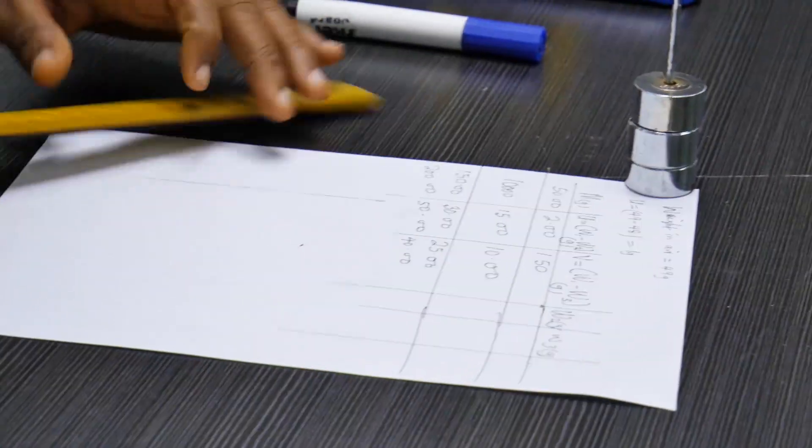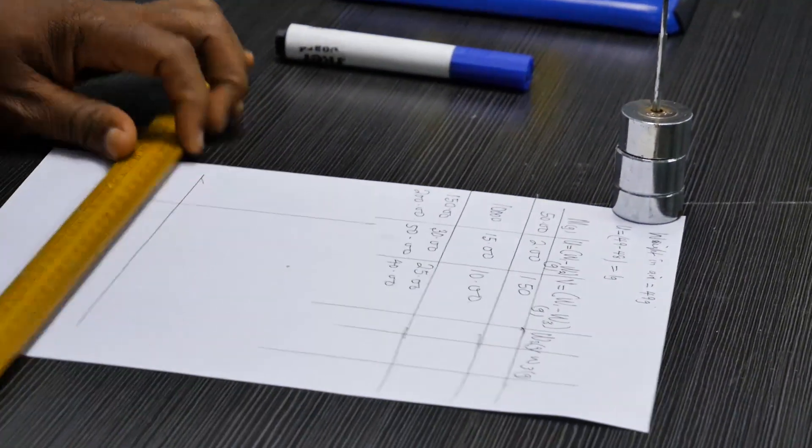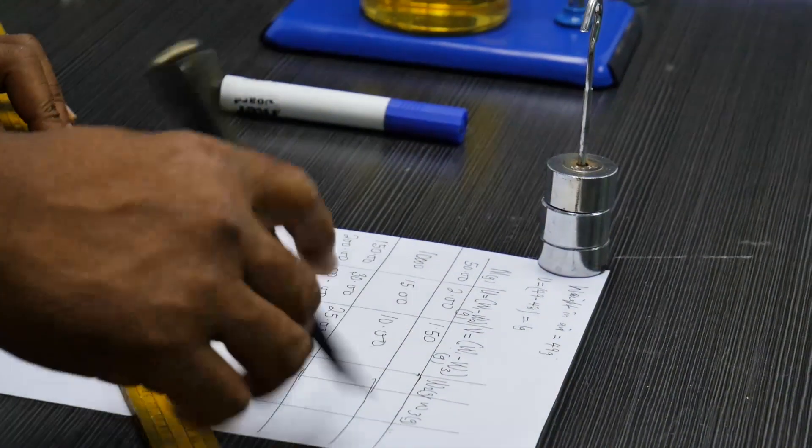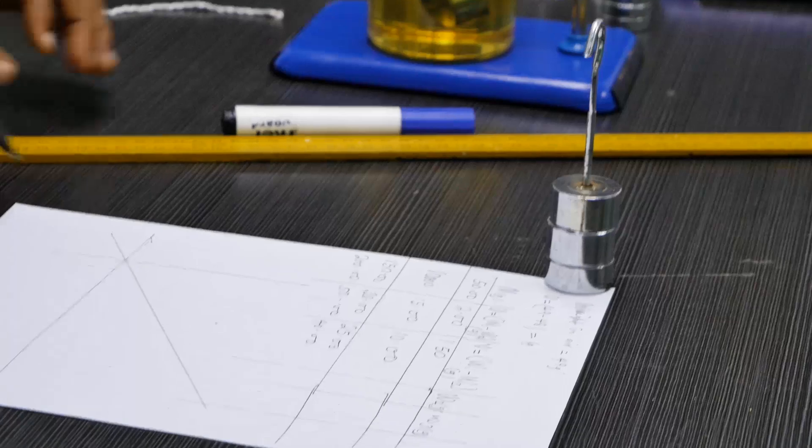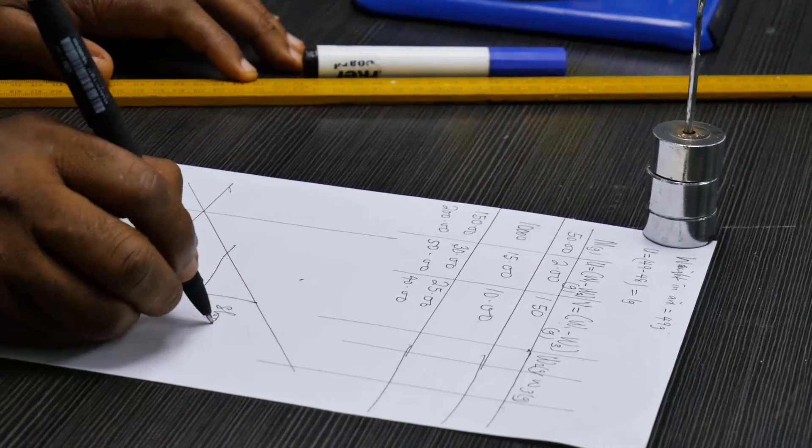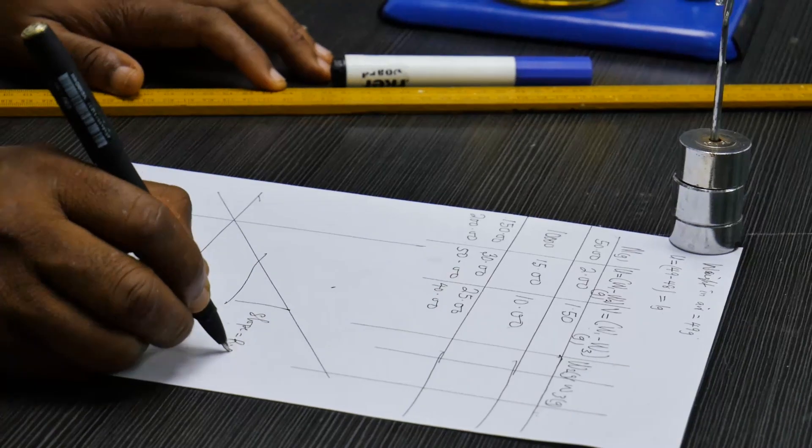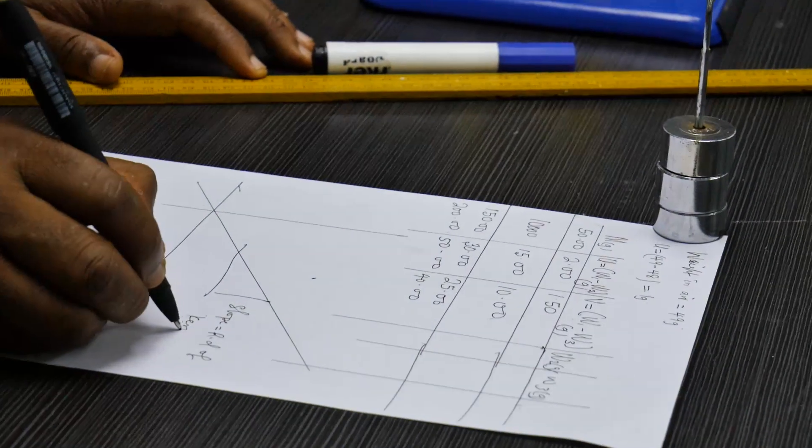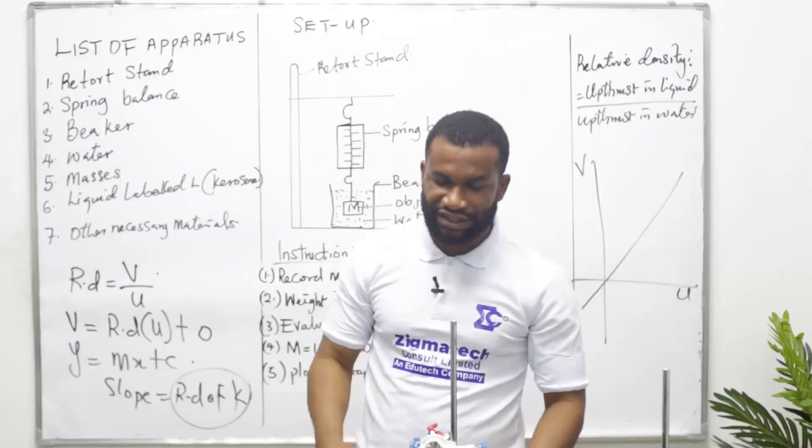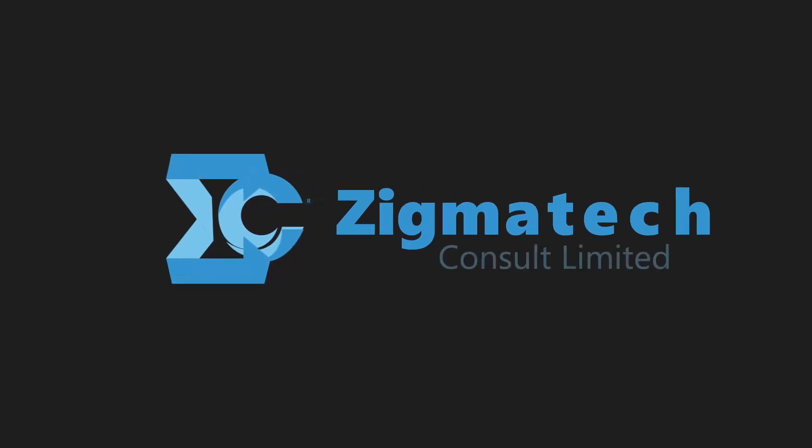Like I said before, your graph is going to be a straight line graph and it should pass through the origin. Your slope should be the relative density of kerosene. That is the experiment. Thank you for being part of this class and have a good day.